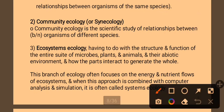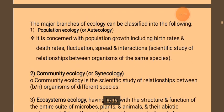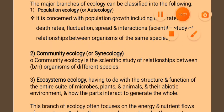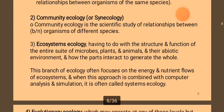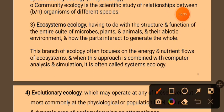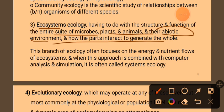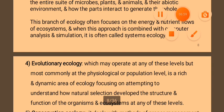Community ecology is the scientific study of relationships with organisms of different species. It differs from population ecology in that it focuses on different species rather than the same species. Ecosystem ecology has to do with the structure and function of the entire suite of microbes, plants, animals, and the abiotic components — how the parts of ecosystems interact.